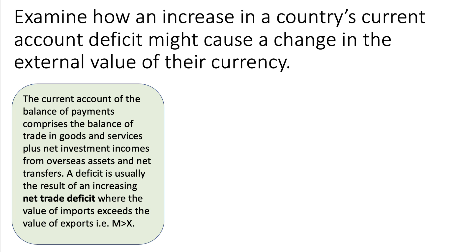Start with the definition. The current account of the balance of payments comprises the balance of trade in goods and services plus primary and secondary income flows — net investment incomes from assets, net transfers, including things like remittances, all factored into the current account. A current account deficit is usually — not always — the result of an increasing trade deficit where the value of imports exceeds the value of exports. It's crucial in the exam to put the word 'value' in there.